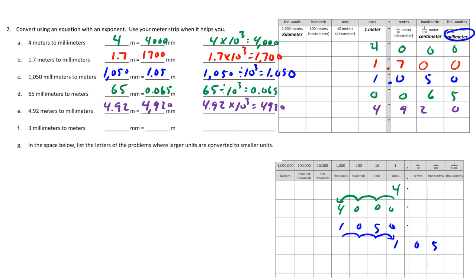The last one: 3 millimeters. I put that in and add zeros all the way down to 3 thousandths of a meter — that's pretty small. Going from millimeters to meters we're dividing, so 3 divided by 10 to the third power equals 0 and 3 thousandths.